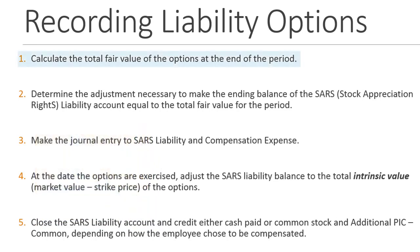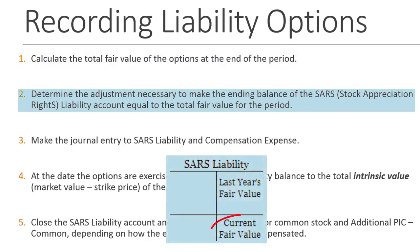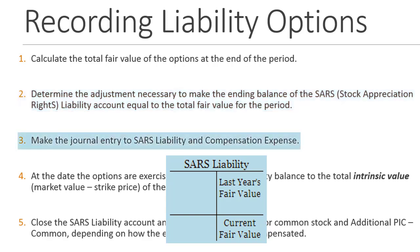Under liability options, we start by calculating the fair value of these options every period. We use fair value — not intrinsic value — because at this point we're estimating what they'll eventually receive from the options. That fair value comes either from the stock market or from the Black-Scholes model. We calculate it every single period and use it as the desired ending balance for what we call the SARs liability — Stock Appreciation Rights liability.